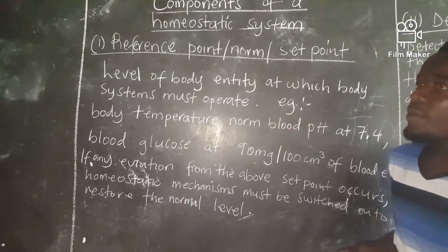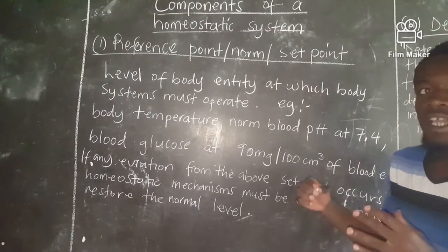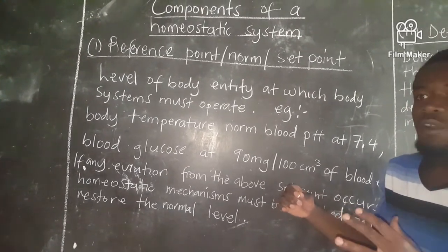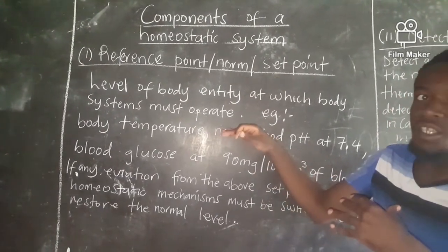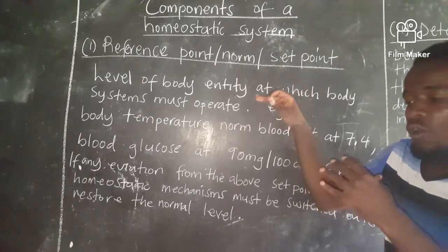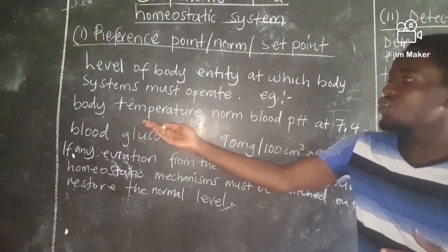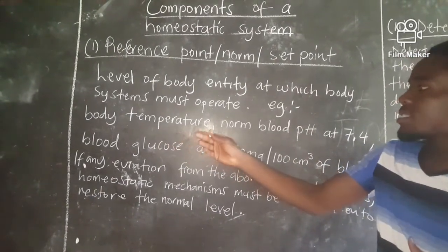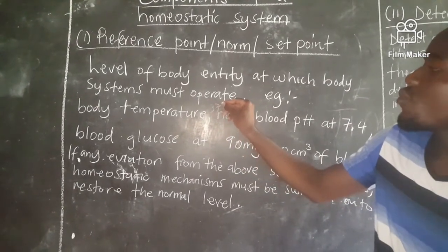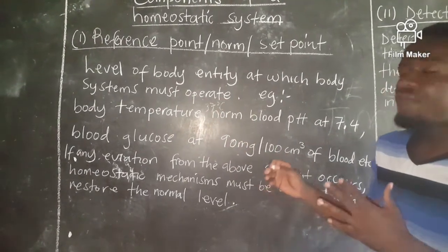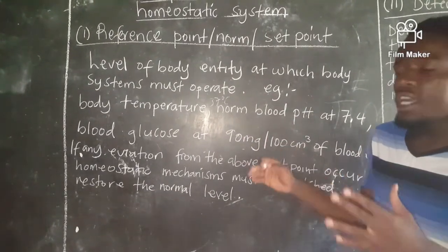The reference point is simply the level of a body entity at which the body system must operate — that required amount of something in a body at which a certain process can occur. For example, we have the body temperature at 37 degrees Celsius.